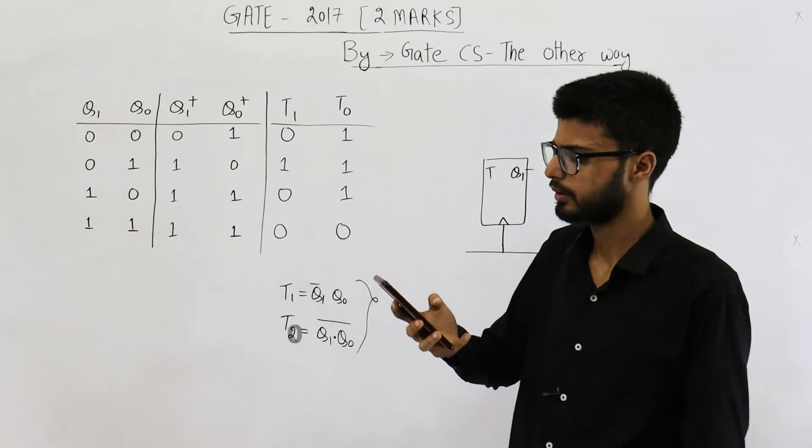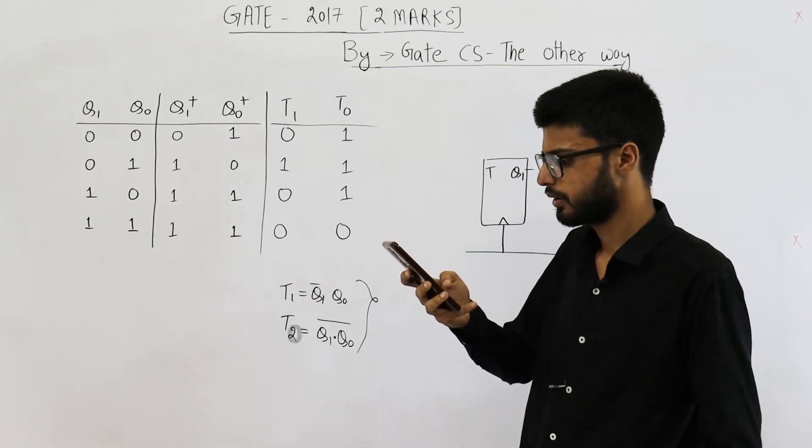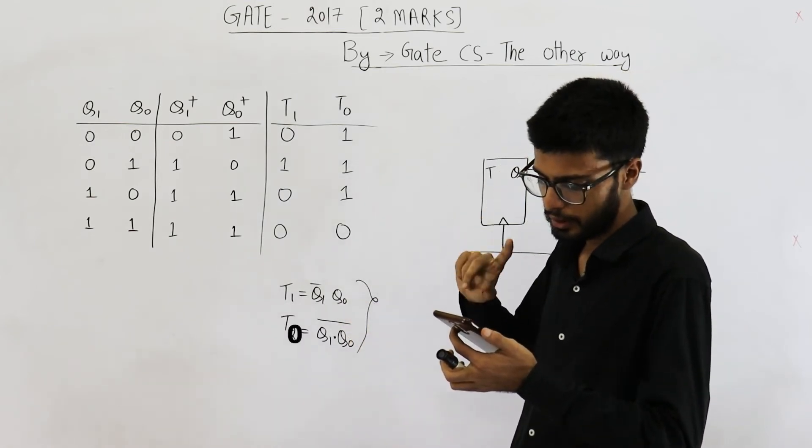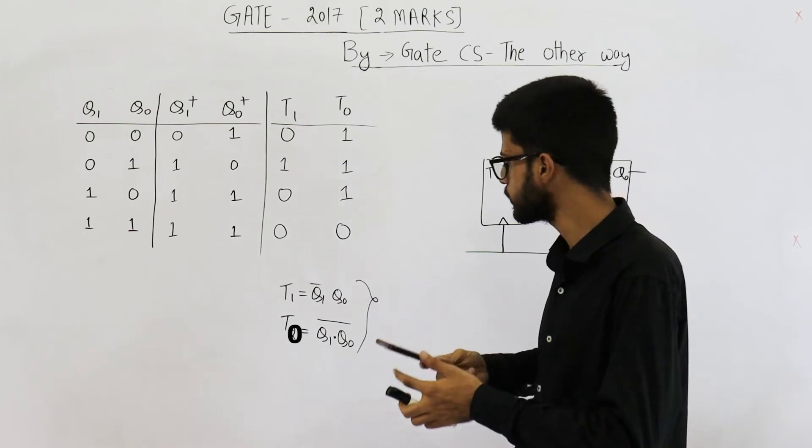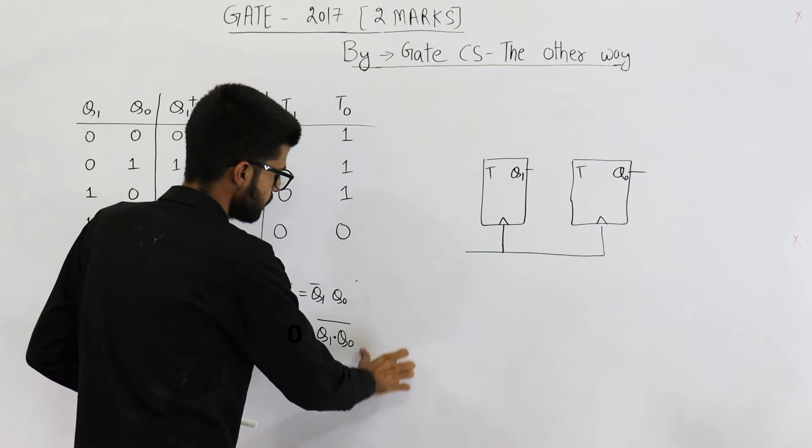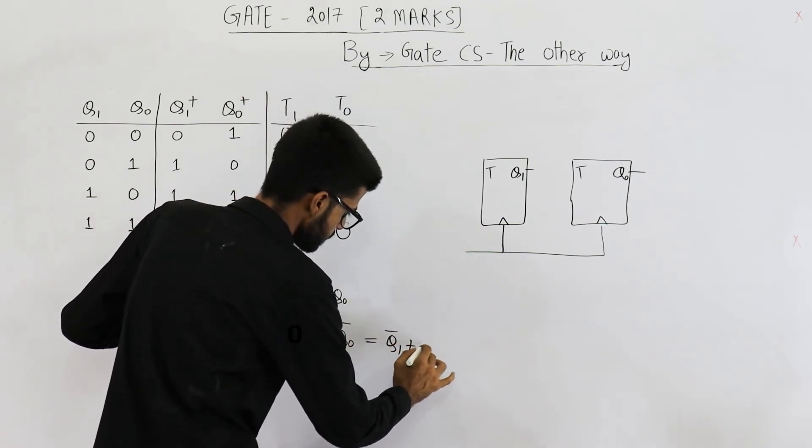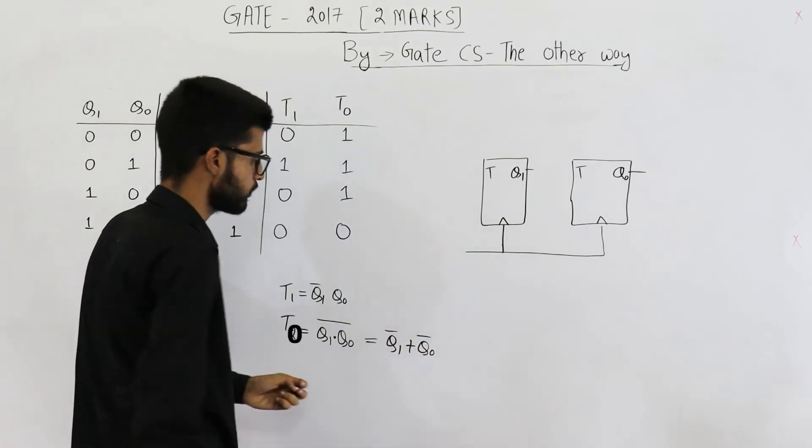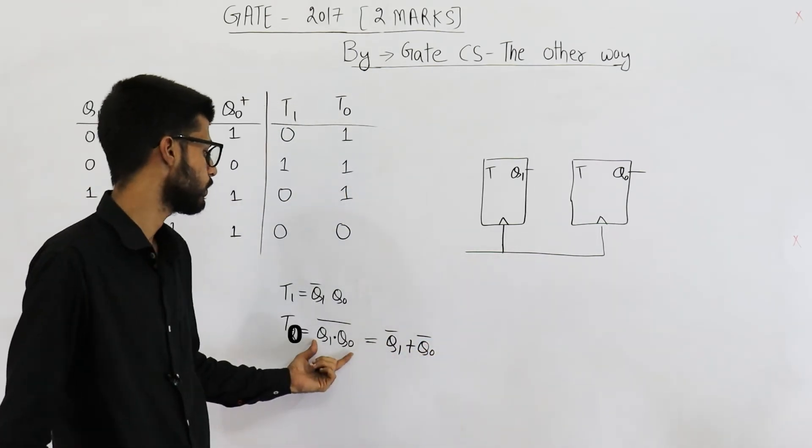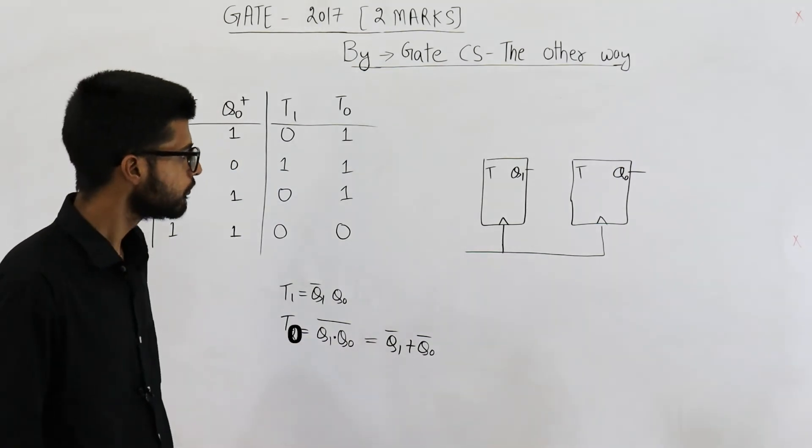So, option B is correct. T1 is equal to Q1 bar Q0. And T0 is equal to Q1 bar plus Q0 bar. See, NAND can be written as Q1 bar plus Q0 bar. So this is given in options. This is also correct. This is also correct. Because both of them are equivalent by using De Morgan's law.